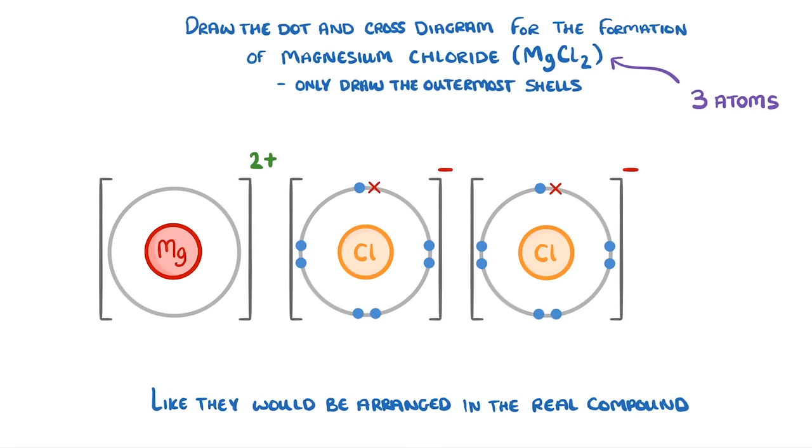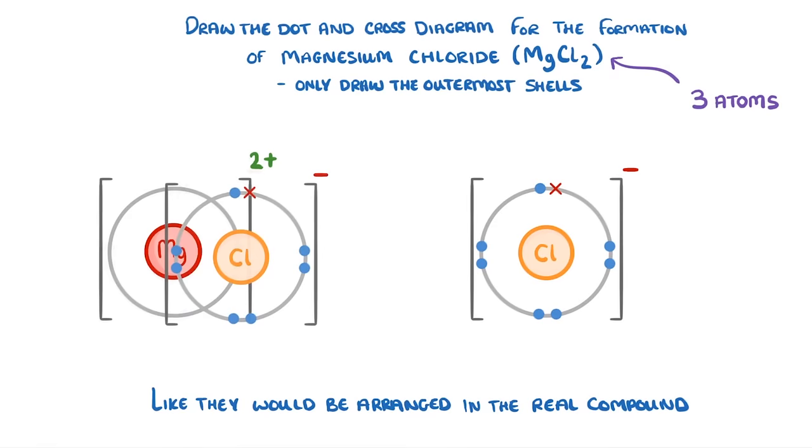So because the chlorides will both be attracted to the positive magnesium we place them on either side of it.